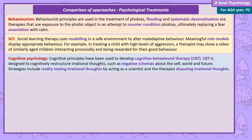Cognitive principles have been used to develop cognitive behavioural therapy (CBT), which is designed to cognitively restructure irrational thoughts such as negative schemas about the self, the world, and the future. Strategies include reality-testing irrational thoughts by acting as a scientist, and the therapist disputing irrational thoughts either empirically or logically.